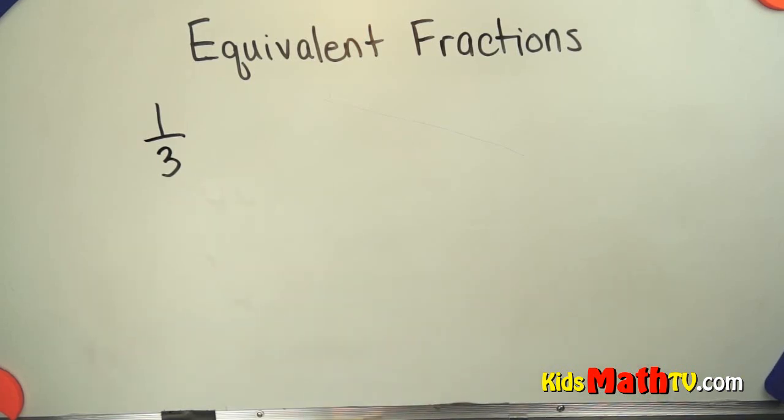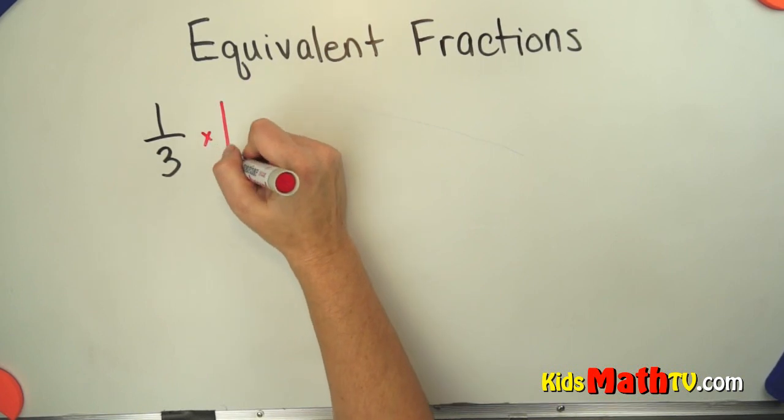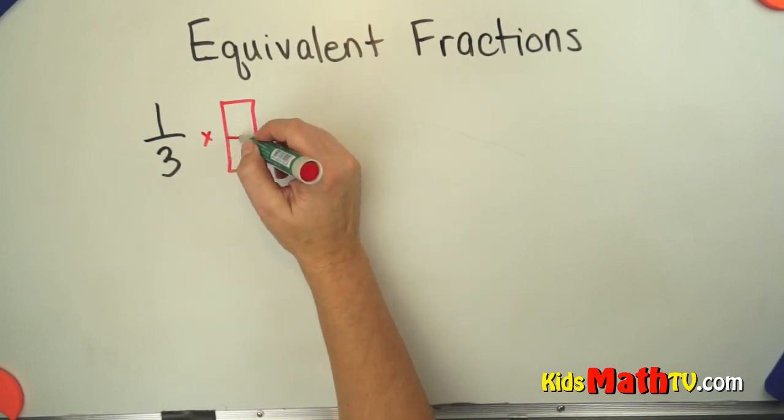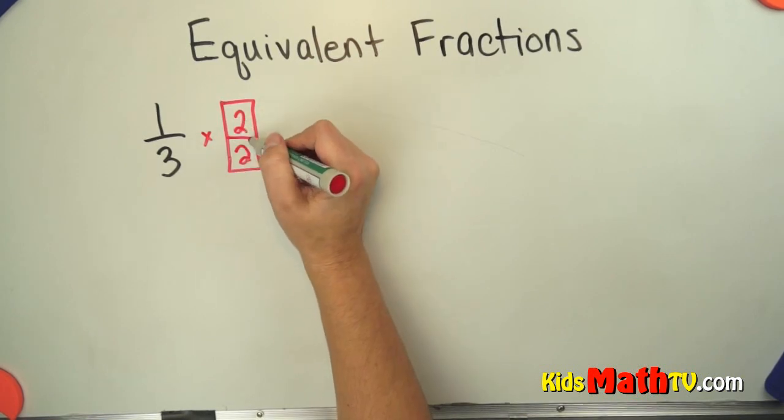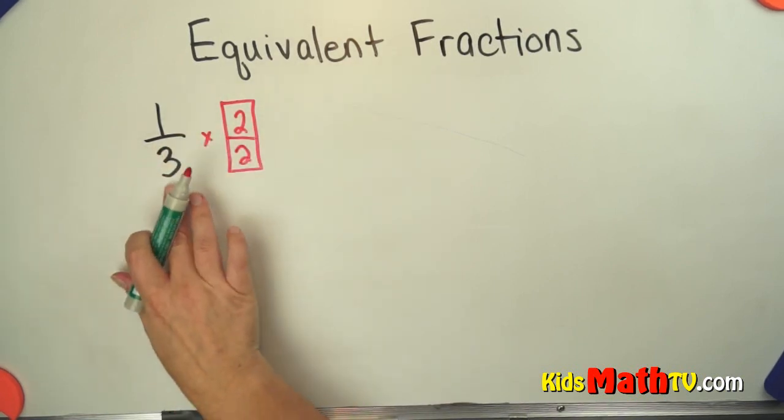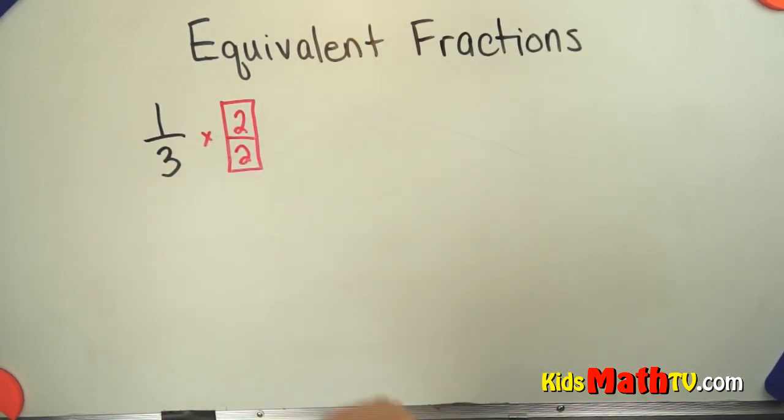So in order to do that we're going to actually multiply by 1. I'm going to represent 1 by this box. 1 as a fraction is any number over itself such as 2 over 2. 2 out of 2 pieces of pizza is the entire pizza. So we're multiplying this by 1. We're not changing the value but we're changing what it looks like.